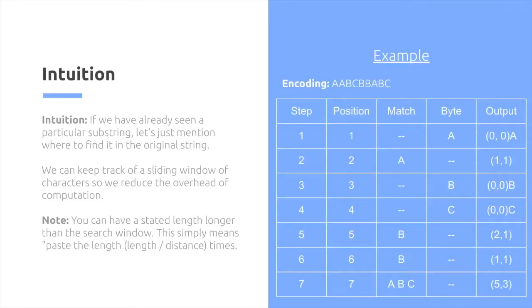So for example, if we're encoding the string that we have up here, we follow the following steps. For step one, we look at our dictionary and it's empty, so we can't possibly find the character A. So we output length distance 00A. So offset 0, and then we have length 0.